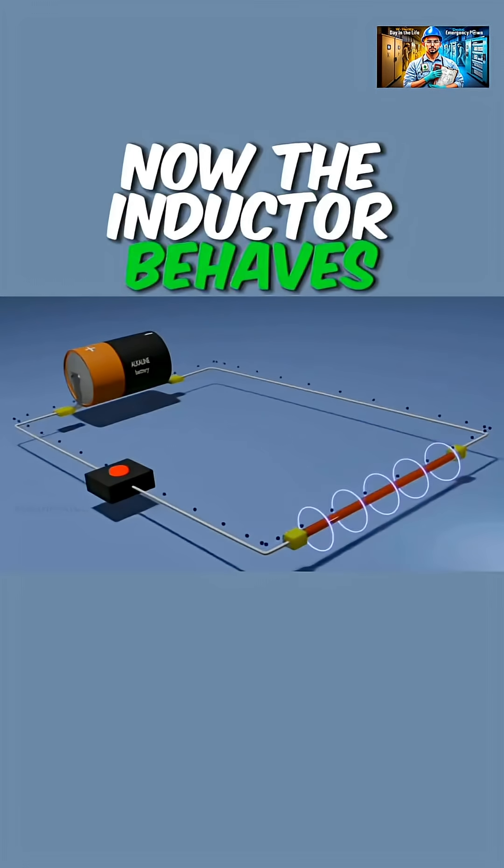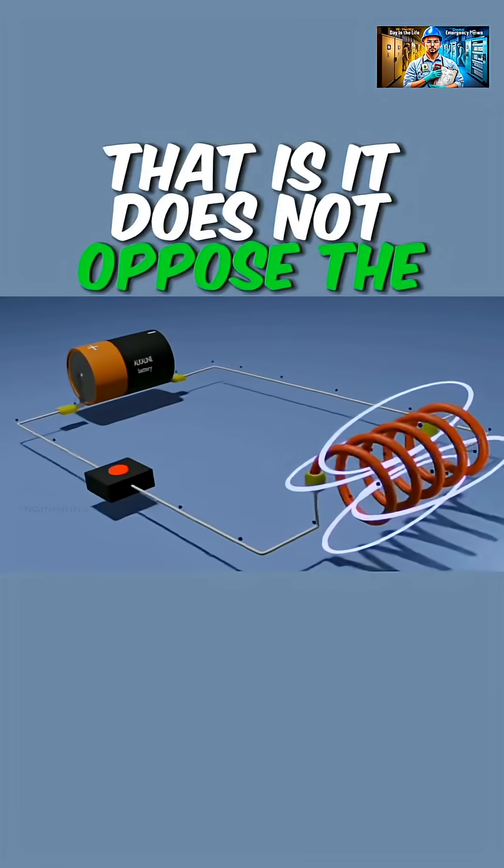Now the inductor behaves like a simple wire. That is, it does not oppose the current flow.